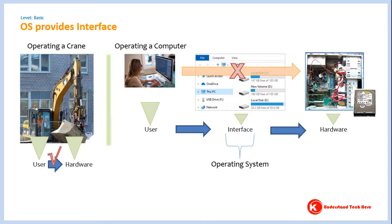If this icon was not present, how would you put documents in a hard disk? It becomes almost impossible to operate the hard disk and pen drive. In fact, if the operating system does not provide an interface, it becomes almost impossible to operate the computer. This is why the operating system is given the name 'operating system' — it is the one that makes it possible to operate a computer.